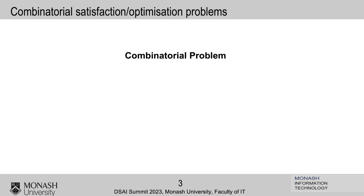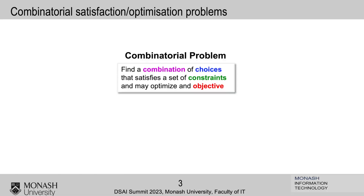I'm talking about combinatorial problems. They can be satisfaction and optimization, but all my examples are going to be optimization because that's what I do. By combinatorial problems I mean: find a combination of choices that satisfies a set of constraints and may optimize — and we do optimize — an objective.